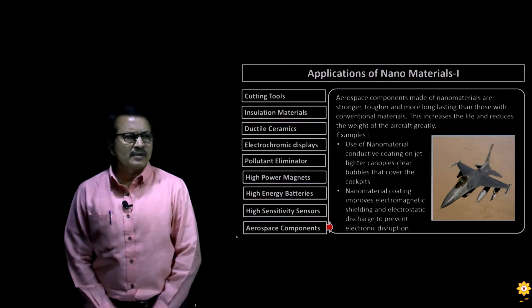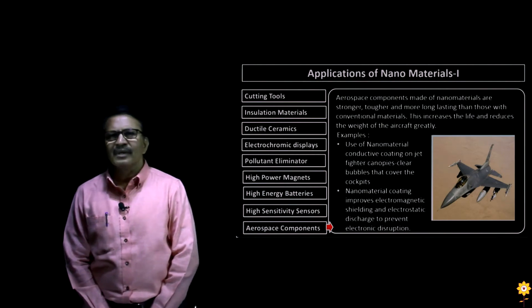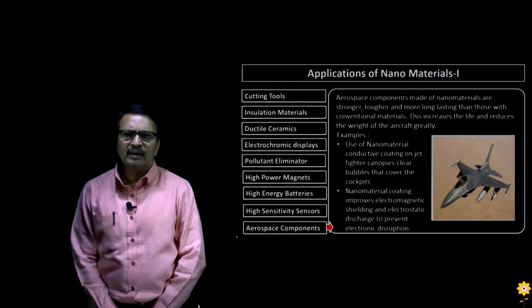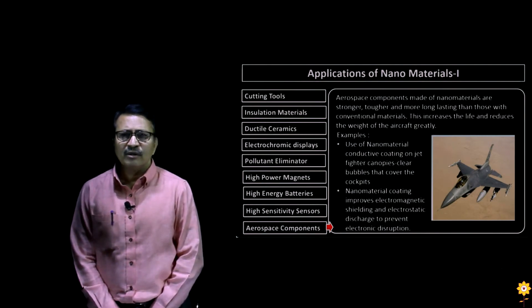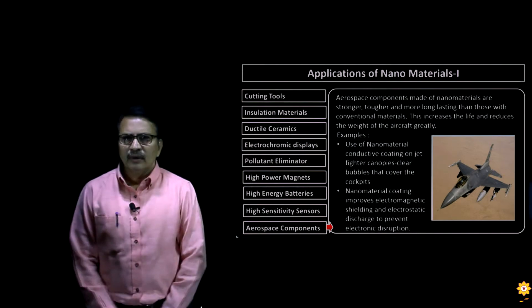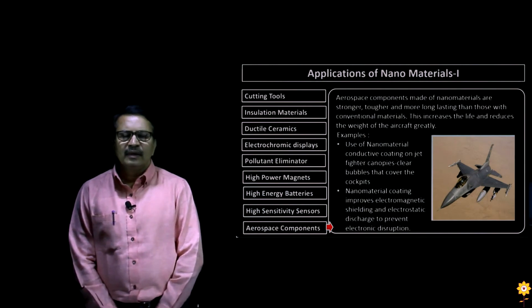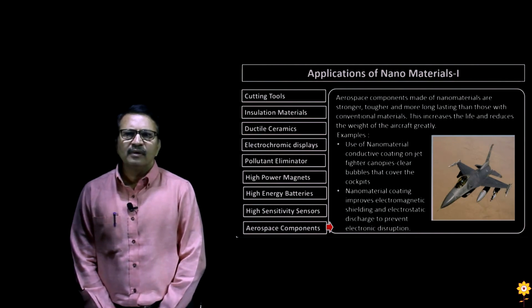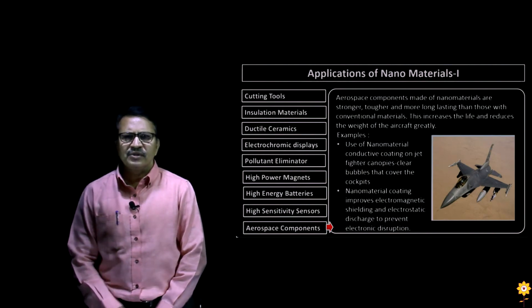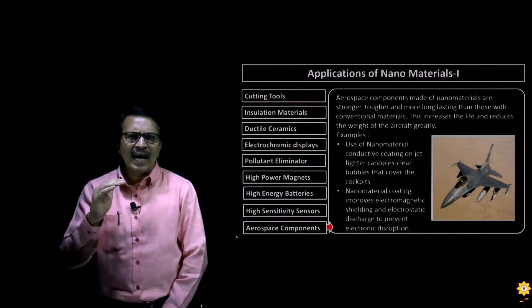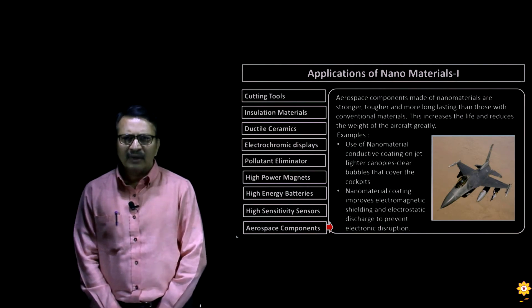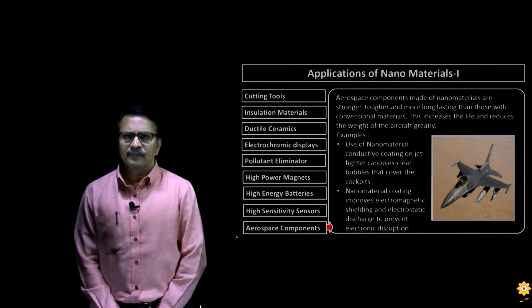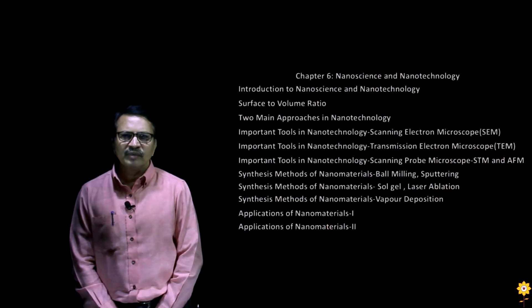We now move to the next application of nanomaterials — aerospace components. Aerospace components made out of nanocrystalline materials are stronger, tougher, and durable, making them long lasting and extremely light in weight, thus enhancing the fuel efficiency of aircrafts. Nanomaterial coats are used over canopies of fighter aircrafts to remove bubbles which cover the entire canopy during high altitudes. Furthermore, applying conducting nanomaterial paint over the entire aircraft improves electromagnetic shielding and decreases electrostatic discharge. With this, we have completed part one of the applications of nanomaterials.